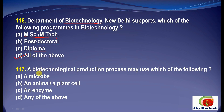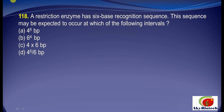Question 17: A biotechnological production process may use which of the following? It uses any of the above — all three options are correct: a microbe, an animal or plant cell, and an enzyme. Question 18: A restriction enzyme has a six-base recognition sequence. This sequence may be expected to occur at which of the following intervals? It is expected to occur every 4^6 base pairs. This is the correct option.